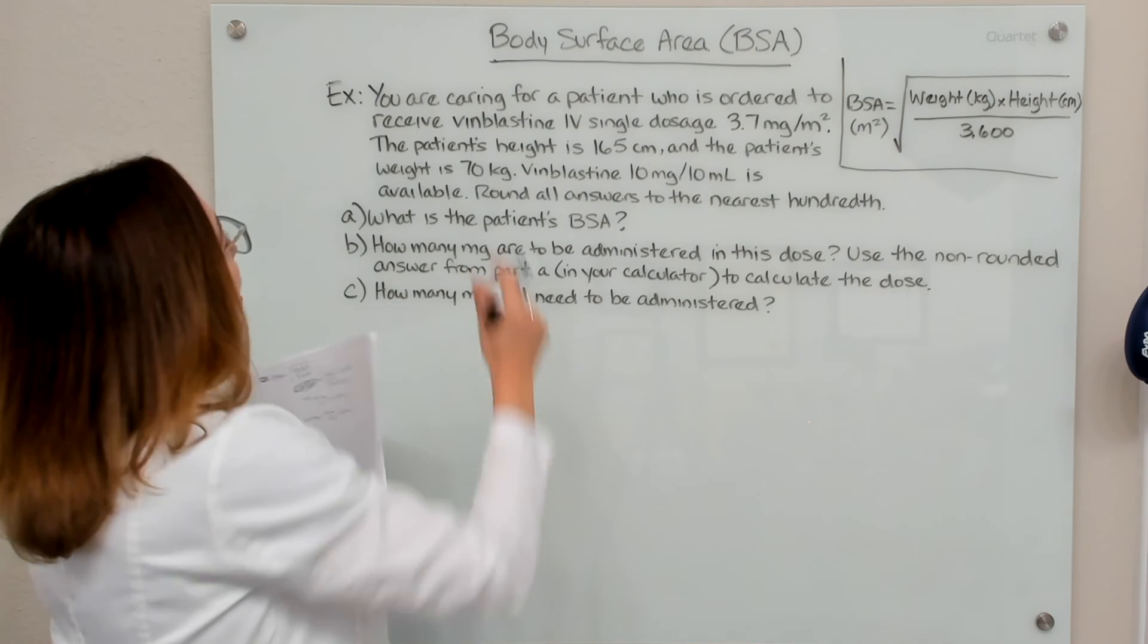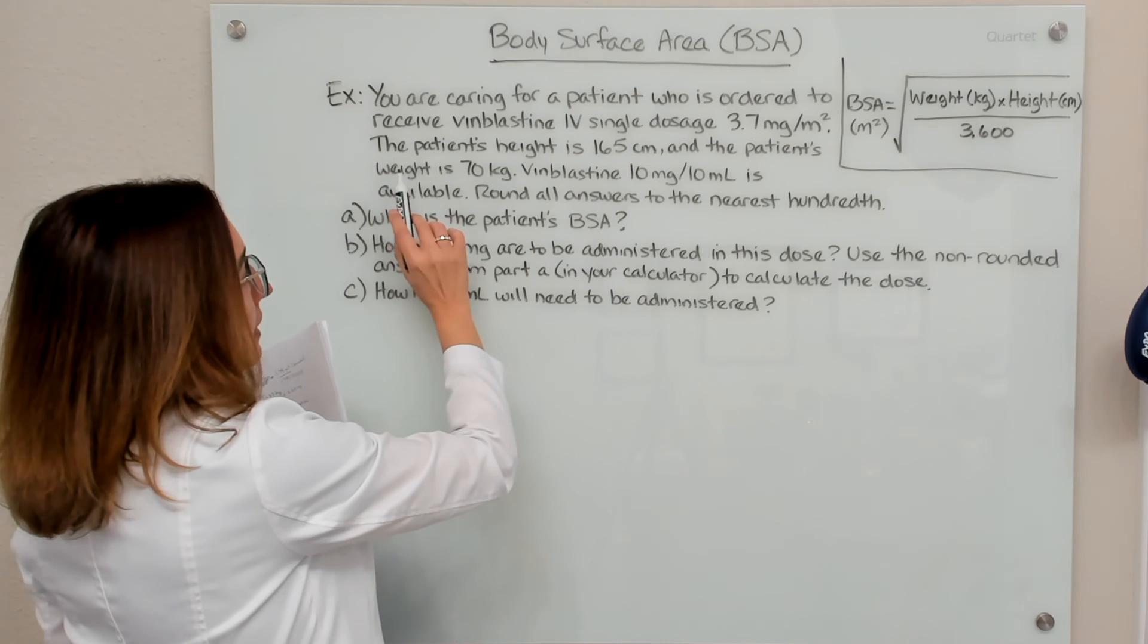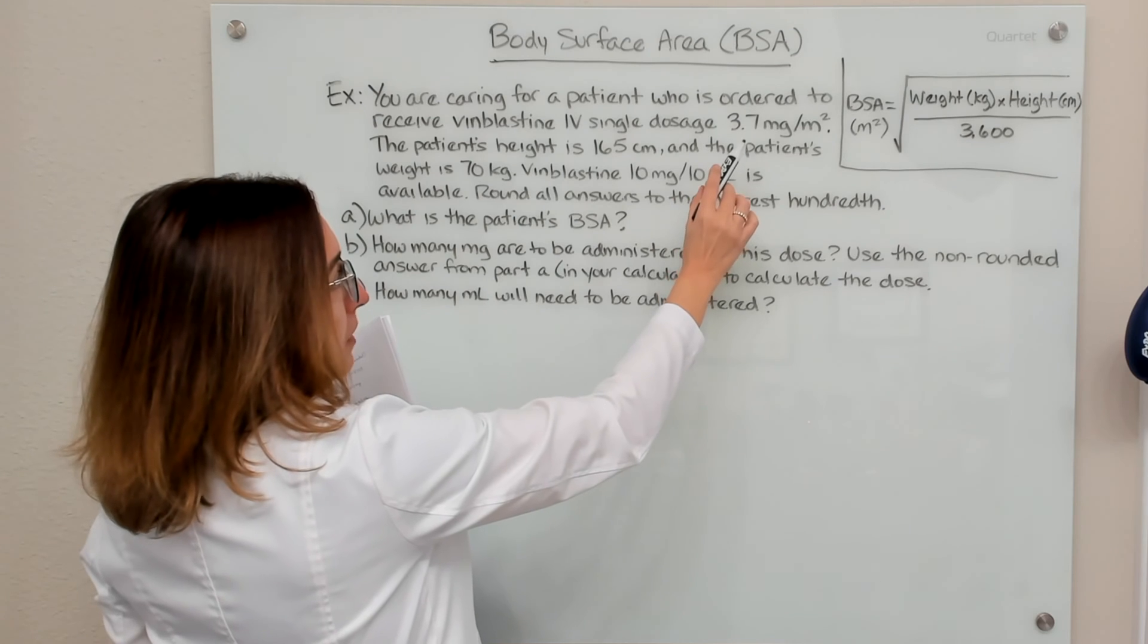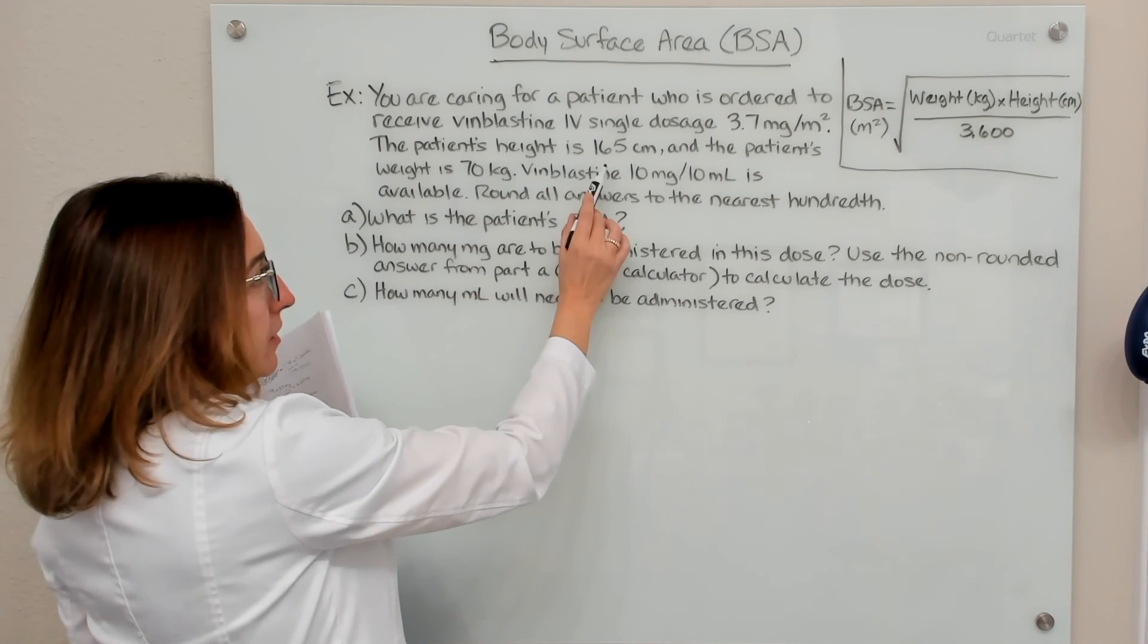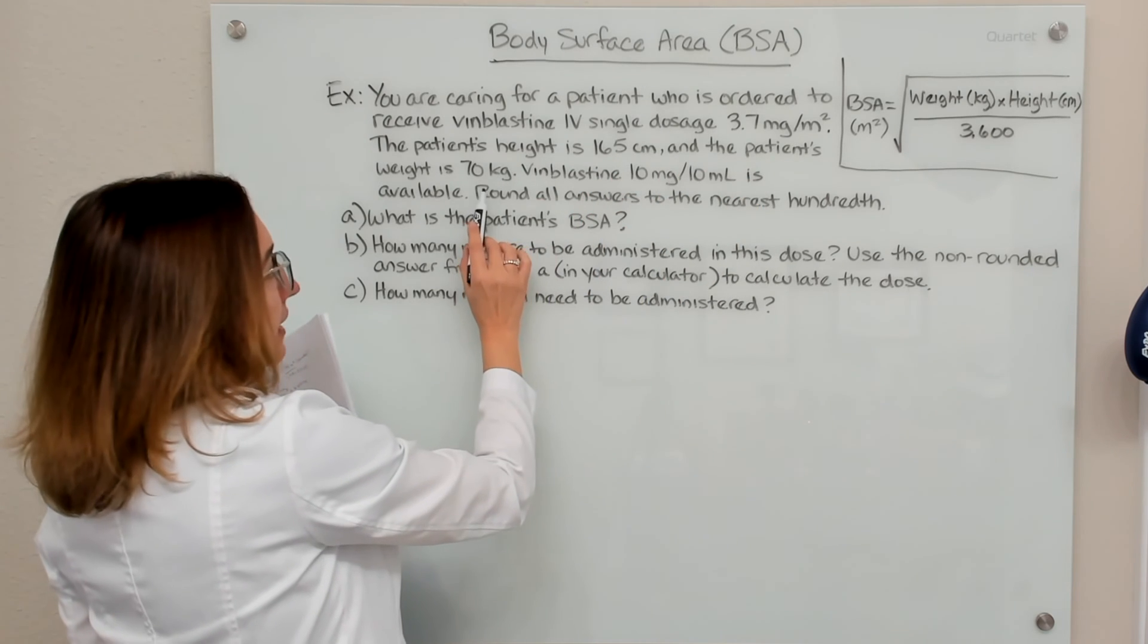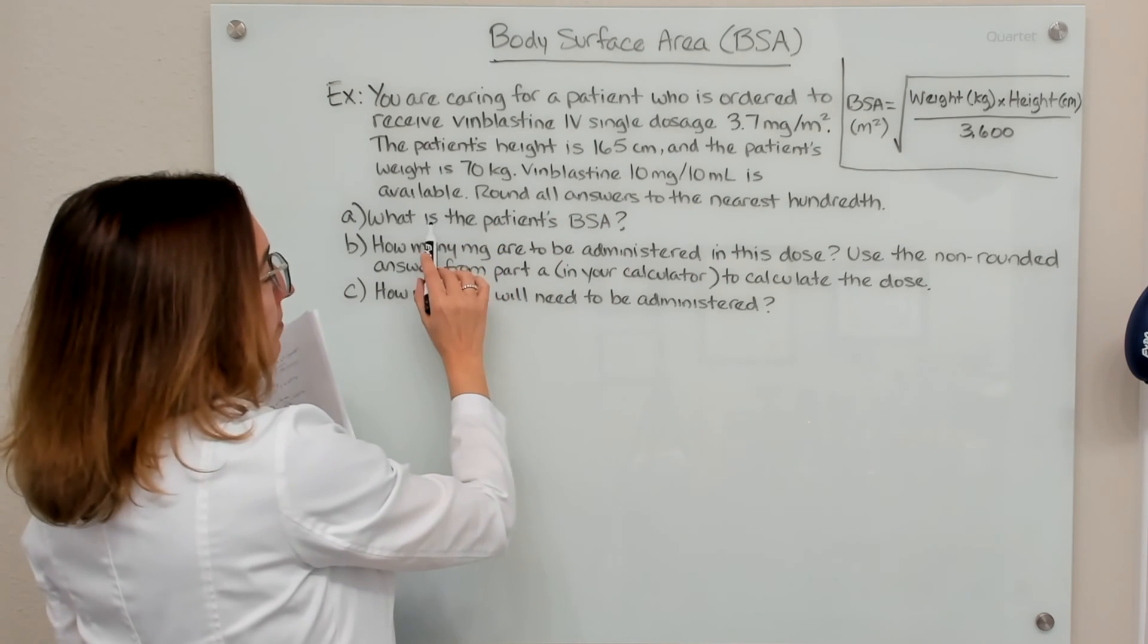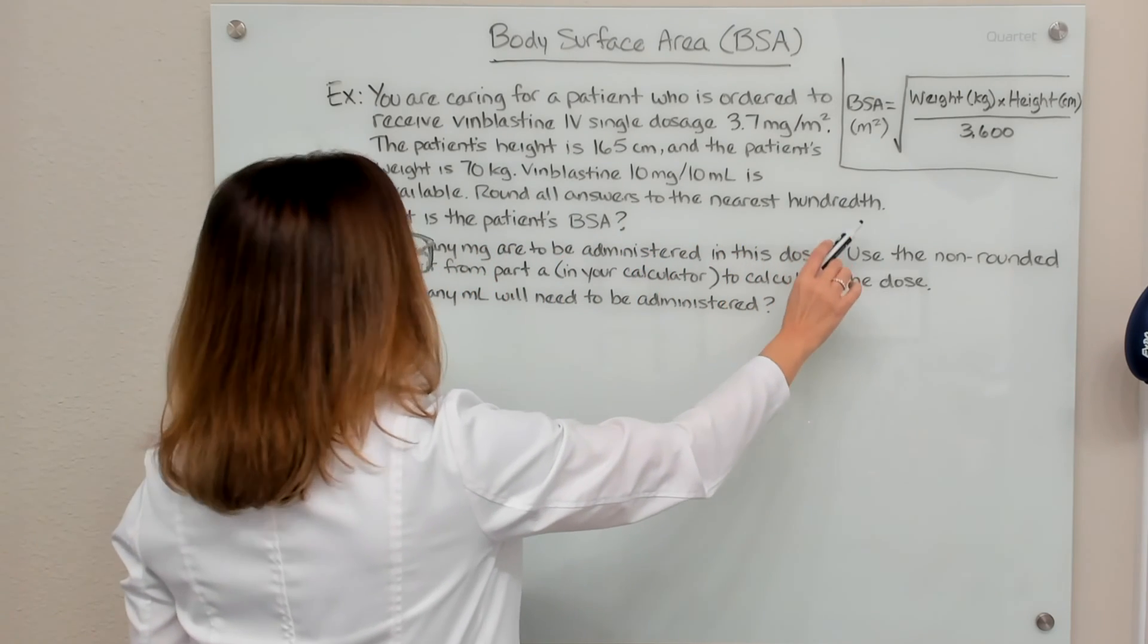Okay, so for our problem here, we are caring for a patient who is ordered to receive vinblastine IV single dosage, 3.7 milligrams per meter squared. The patient's height is 165 centimeters, and the patient's weight is 70 kilograms. And vinblastine, 10 milligrams in 10 mls of solution is available. And we need to round all of our answers to the nearest hundredth.